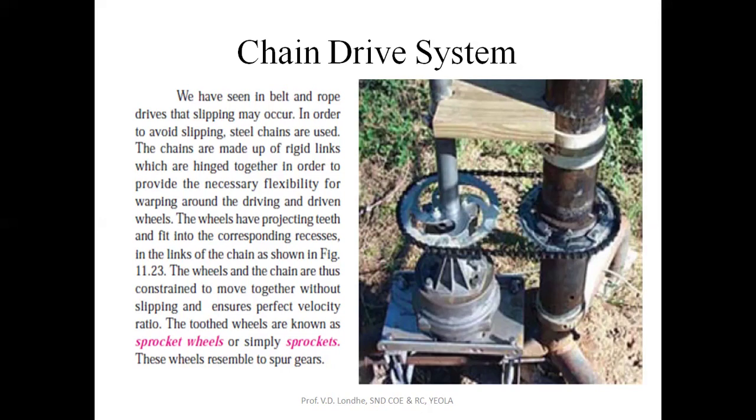The wheels and chain are thus constrained to move together without slipping and it ensures perfect velocity ratio. The two wheels are called sprocket wheels and these wheels basically resemble spur gears.